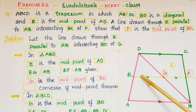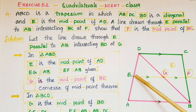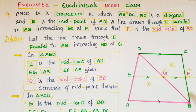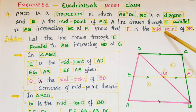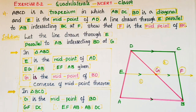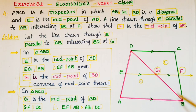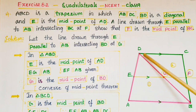A line is drawn through E, this midpoint, parallel to AB, intersecting BC at F. We have to show that F is the midpoint of BC. Now let the line drawn through E, which is parallel to AB, also intersect the diagonal BD at G.